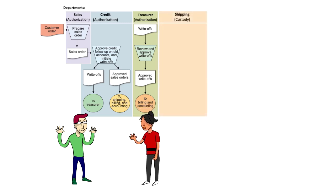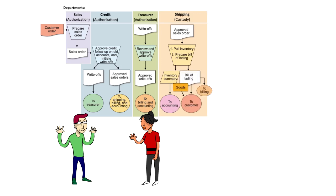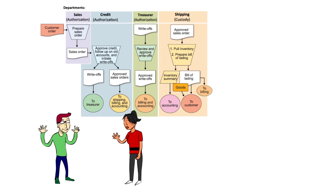Now, she prepares the bill of lading. Three good controls in place here. First, the approved sales order was required for Tom to release the goods from the warehouse. Second, the segregation of duties between the authorization function from credit and sales and the custody of the inventory in the shipping department. Finally, the bill of lading you see here is sequentially numbered, again, helping with the completeness and existence assertions.